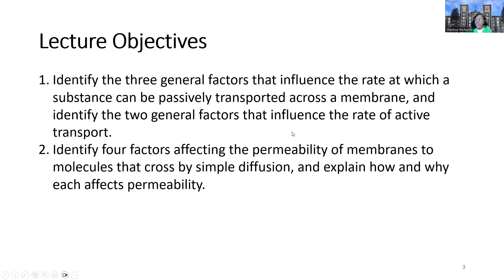We're going to hit the first two objectives together. One is to identify the three general factors that influence the rate at which a substance can passively be transported across the membrane, and then talk about two factors that influence the rate of active transport. Objective two is to think about factors that affect the permeability of a membrane to molecules — what allows some things to go through and other things not.